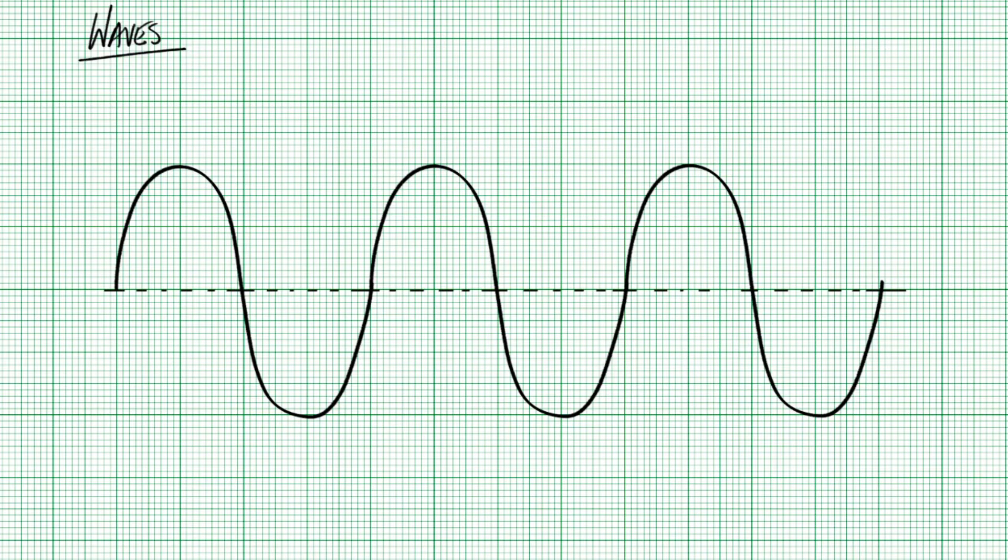So if you see something like this, it should be fairly okay for you to state things like the wavelength which you could mark in from there to there, things like the amplitude, what else could we say, this would be a trough, that would be crest and so on and so on.